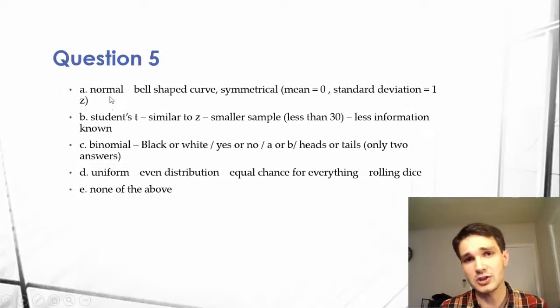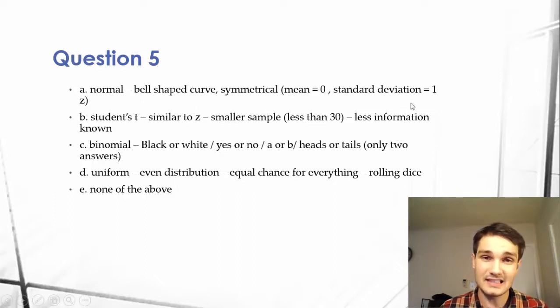So normal distribution has a bell-shaped curve, is symmetrical, with a mean of 0 and a standard deviation of 1z. So this is generally the z-score.